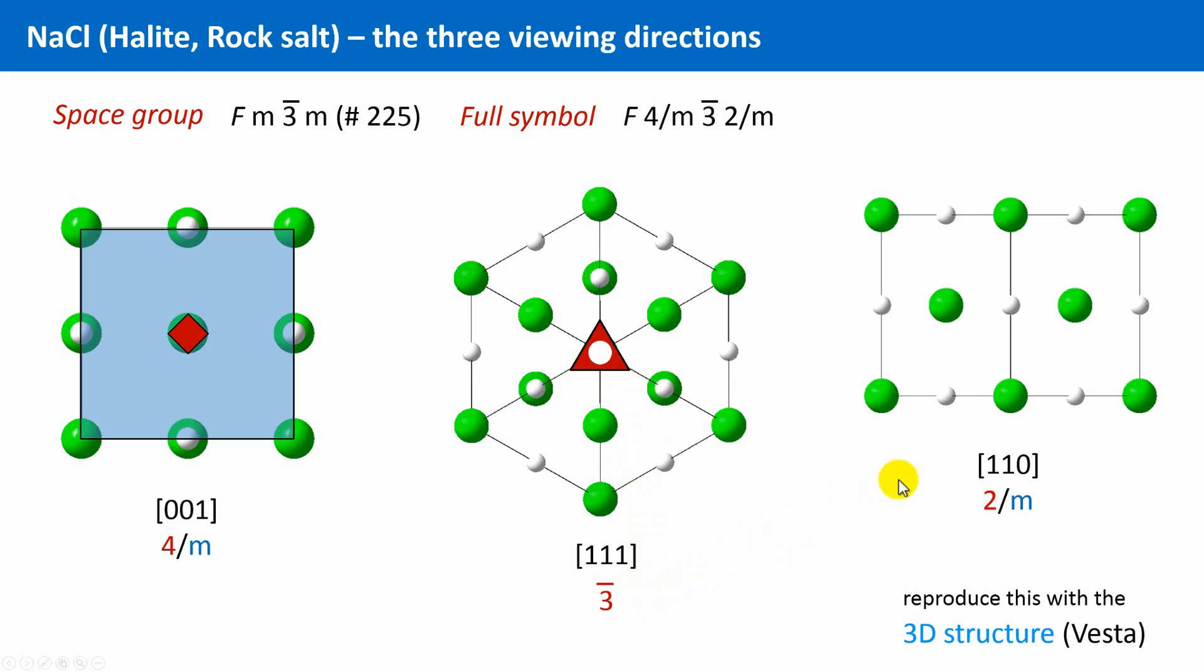And finally, the third viewing direction is along 110. This means the face diagonal. And interestingly, we see here only a twofold axis of rotation, not a fourfold one.